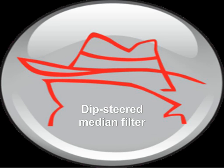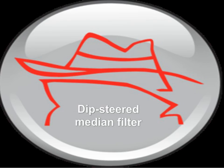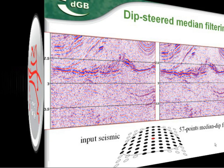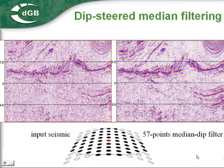In this tutorial, we learned to create and apply the dipsteered median filter, an application of the dipsteering plugin. Dipsteered median filtering is an edge-preserving smoothing technique aimed at removing random noise from seismic data and enhancing laterally continuous events.